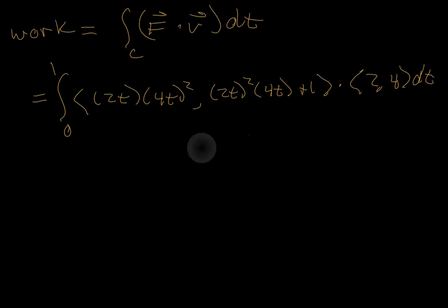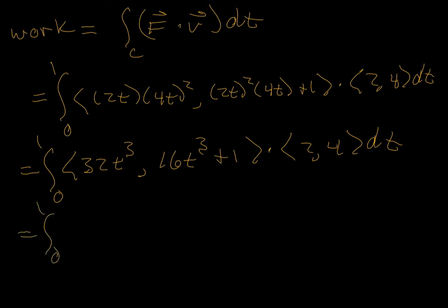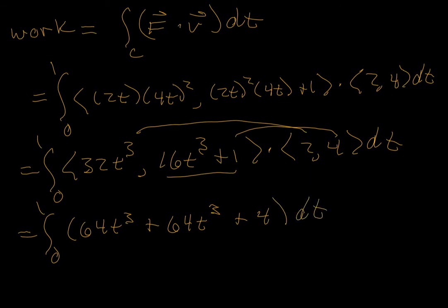A little bit messy, let's see what we can make of it. 0 to 1, 16t², that would be 32t³. 4t² times 4t is 16t³ plus 1, dot product <2, 4> with respect to t. We'll do our dot product calculation. 0 to 1, this times this would be 64t³ plus this times those two terms which would be another 64t³ plus 4 all with respect to t. Getting close.